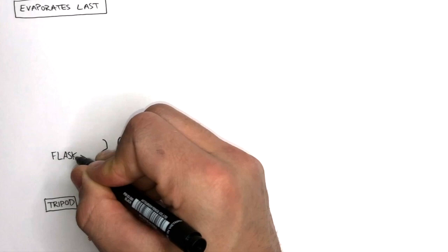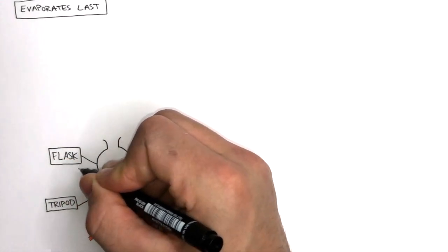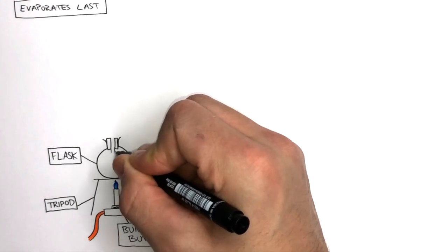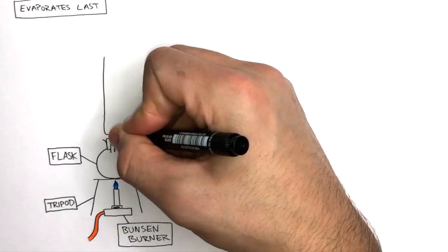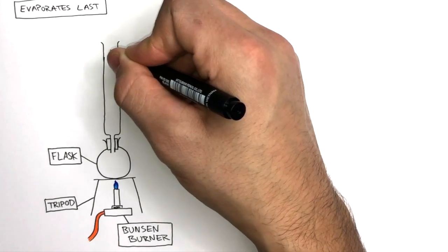In fractional distillation, the mixture is placed in a round-bottom flask which is heated using a Bunsen burner. The fractionating column slots perfectly into the round-bottom flask, so that no gases can escape.